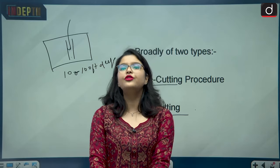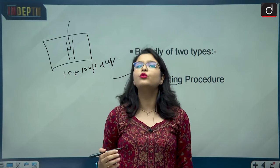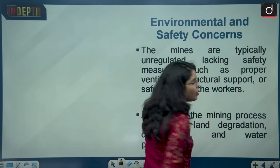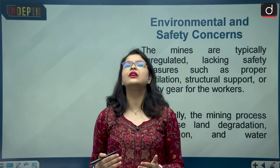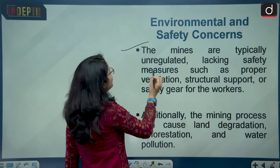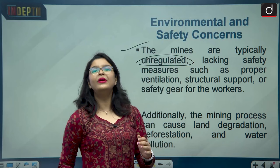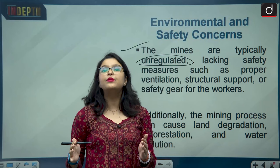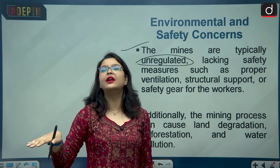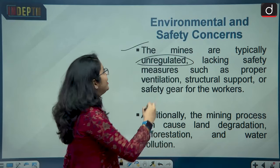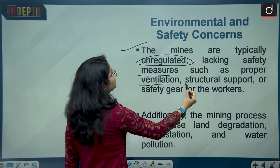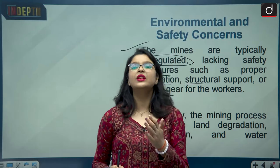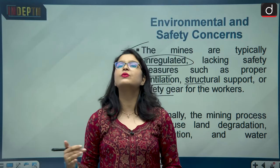These were the two kinds of rat hole mining techniques. Now, regarding environmental and safety concerns: the mines are typically unregulated, meaning the government cannot regulate the mining process. Large numbers of blasts are conducted to explore new mines. There is a lack of safety measures such as proper ventilation, structural support, or safety gear for workers, who cannot access even basic safety standards.